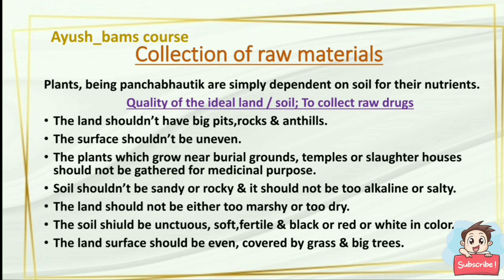Collection of raw materials: plants being panchabhautic, or simply dependent on soil for their nutrients, the quality of ideal land or soil to collect raw drugs is important. The land should not have big pits, rocks, or anthills; the surface shouldn't be uneven. Plants growing near burial grounds, temples, or slaughterhouses should not be gathered for medical purposes. Soil shouldn't be sandy or rocky, and should not be too alkaline or salty. The land should not be too marshy or too dry. The soil should be ubiquitous, soft, fertile, and black, red, or white in color. The land surface should be even, covered by grass and big trees.